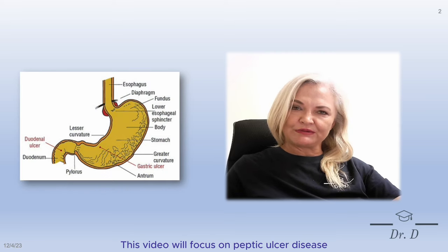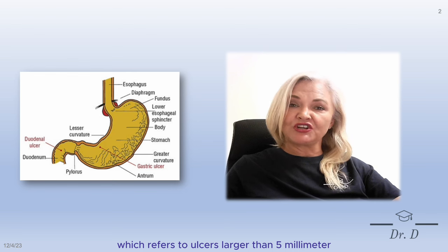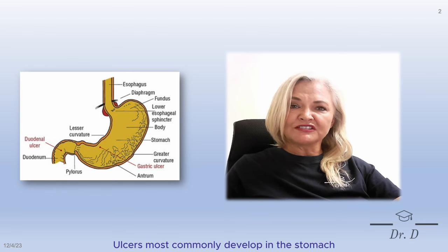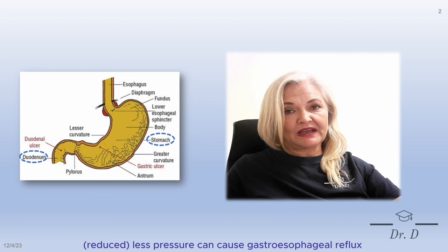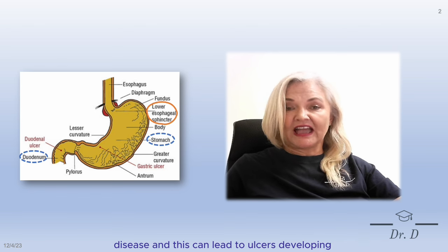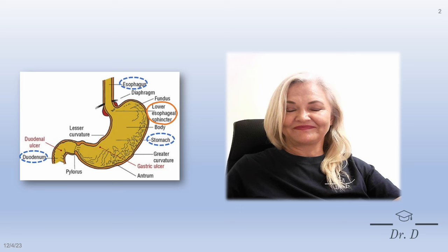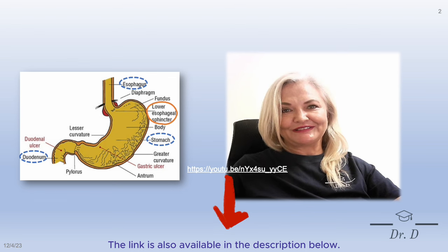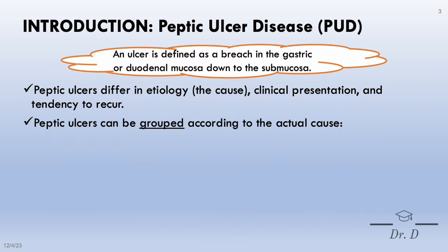This video will focus on peptic ulcer disease, which refers to ulcers larger than five millimeters extending deeper into the mucosa. Ulcers most commonly develop in the stomach and the duodenum, but lower pressure can cause gastroesophageal reflux disease, leading to ulcers developing in the esophagus. An ulcer is defined as a breach in the gastric or duodenal mucosa. Peptic ulcers differ in etiology, clinical presentation, and tendency to recur.